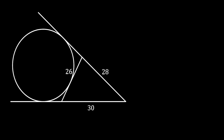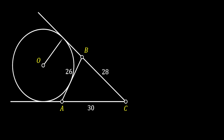First, let's label all the vertices of our triangle as A, B and C. We are also going to label the center of our circle as O. Then let's pull the radius of our circle to the upper tangency point and label this tangency point as Q.